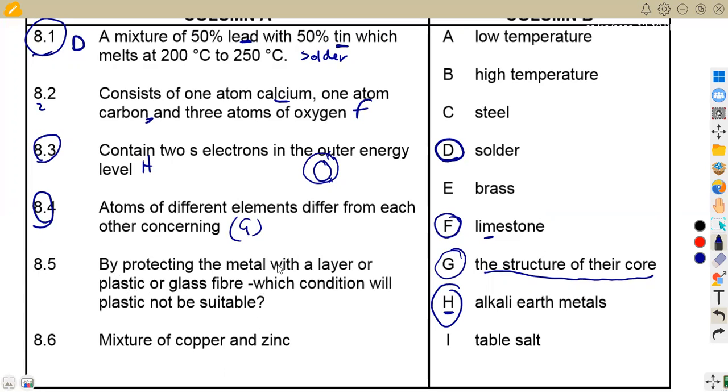By protecting the metal with a layer of plastic plus fiber, which condition will plastic not be suitable? Plastic, we know it's going to melt after the increase in temperature. So that's high temperatures can affect the plastic. So which is a B.